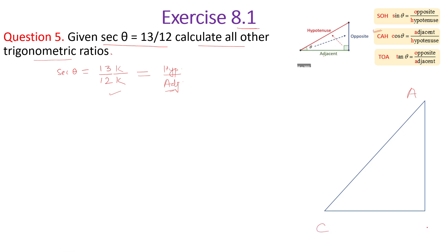In triangle ABC, let this angle be 90 degrees and this angle is theta. Sec theta gives us hypotenuse as 13K — the side opposite to the right angle. The adjacent side to theta is 12K.